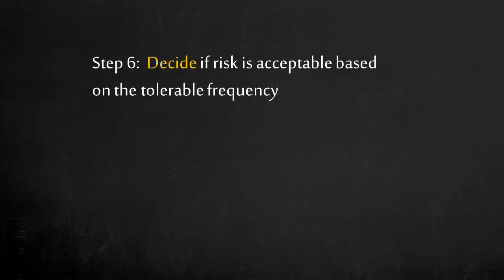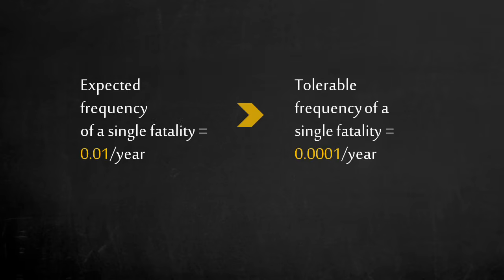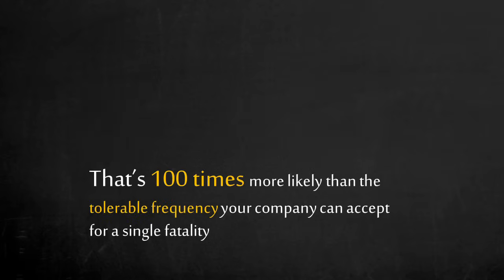Step 6: decide if risk is acceptable based on the tolerable frequency. Now we can make a risk-based decision. Is this process as safe as we want it to be? Comparing what we calculated to the tolerable frequency, this scenario is 100 times more likely to occur than is acceptable. Since we cannot accept this risk, we need to find a way to reduce the risk.